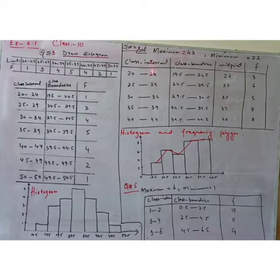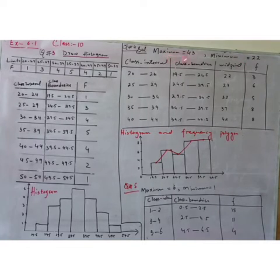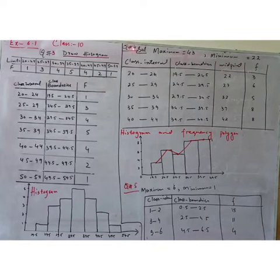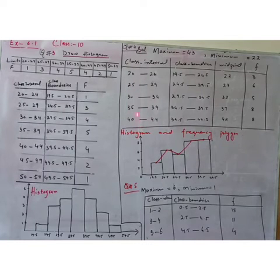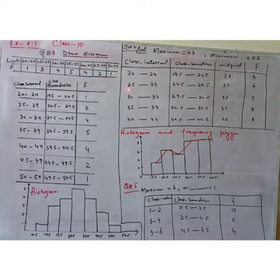Question number 4: different data is given. We check what is the maximum and minimum value — maximum is 43 and minimum is 22. In question 4, we have to construct a frequency distribution, meaning we make class intervals and corresponding frequencies, and further draw a histogram and a frequency polygon. We draw the frequency distribution with class size 5, starting from groups 20 to 24, 25 to 29, 30 to 34, 35 to 39, 40 to 44.